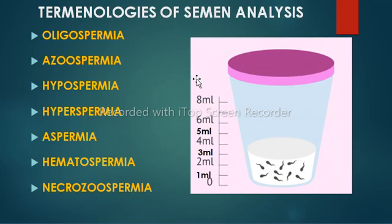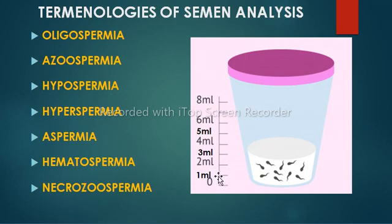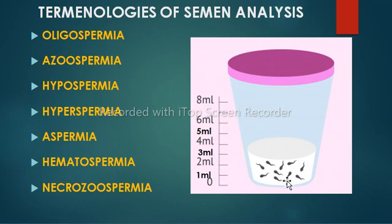Here are some terminologies used in semen analysis. Oligospermia: when the sperm count is less than 15 million per ml. Azoospermia: when there is no spermatozoa in the semen. Hypospermia: when the semen volume is less than 1.5 ml. Hyperspermia: when the semen volume is greater than 4.5 ml. Aspermia: when semen has no volume. Hematospermia: when RBCs are present in semen. Necrospermia: when dead spermatozoa are present in high concentration in semen.